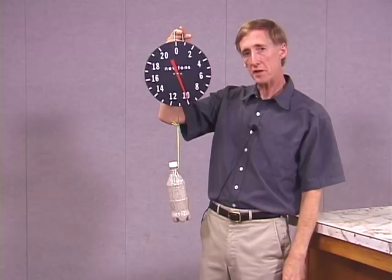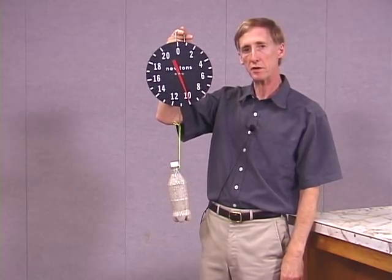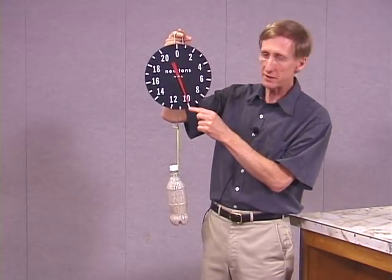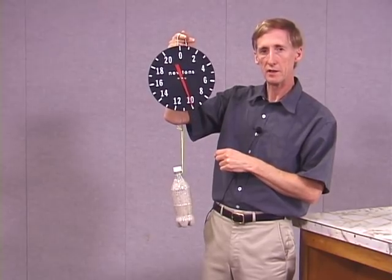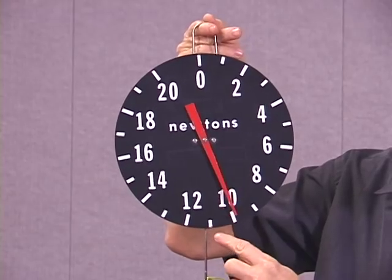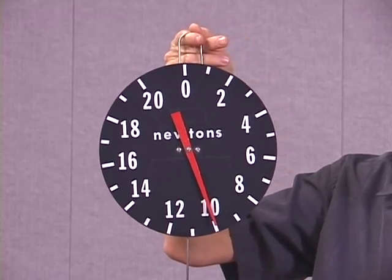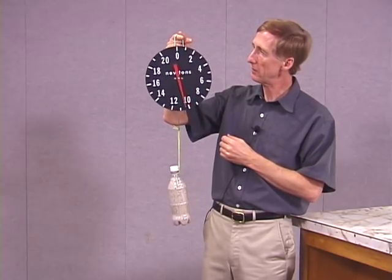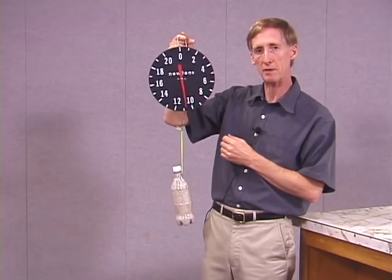So we've seen that to keep the object in equilibrium, I have to exert a force upward that's equal to the object's weight. Now you may have noticed that as I've been holding this, the needle has been oscillating back and forth around 10. So since the needle is reading different things, even while I'm holding the same bottle here, there must be something involved other than just the weight of the bottle.